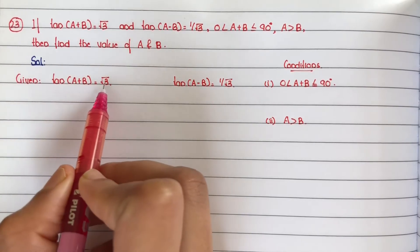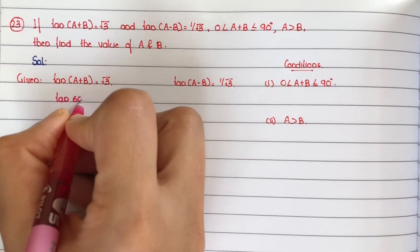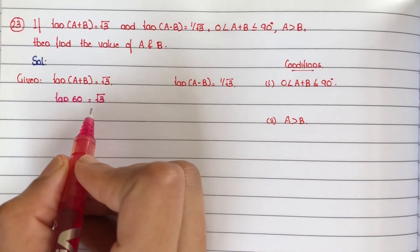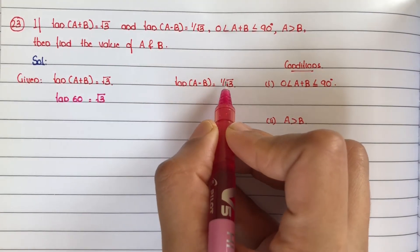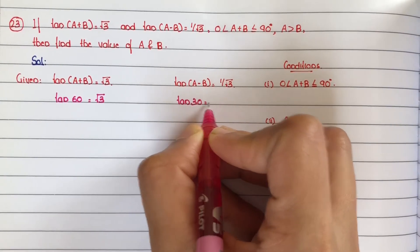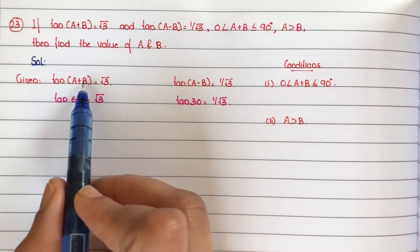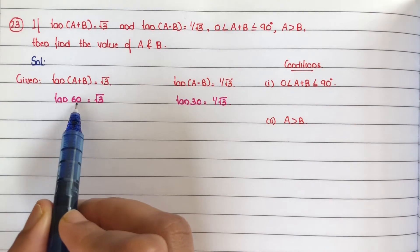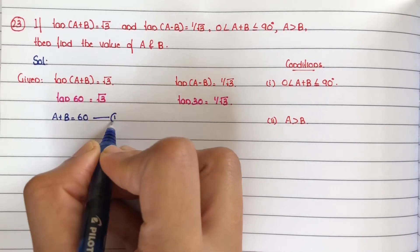Given that tan(a+b) is equal to root 3, and we know that tan 60 degrees is equal to root 3. Similarly, tan(a-b) is equal to 1 by root 3, and we know tan 30 degrees equals 1 by root 3. By comparison, we can say that a+b is equal to 60 — equation number 1, and a-b is equal to 30 — equation number 2.